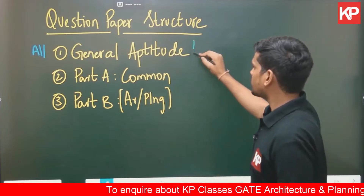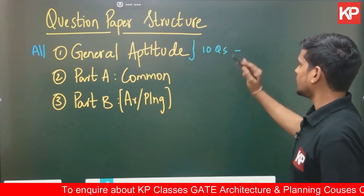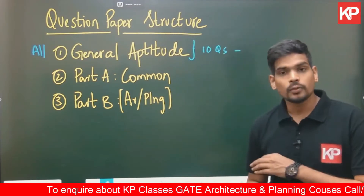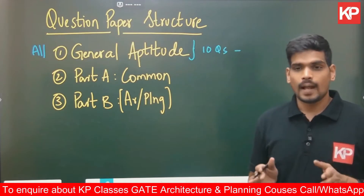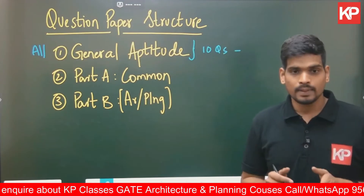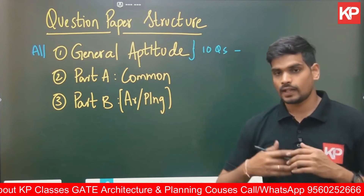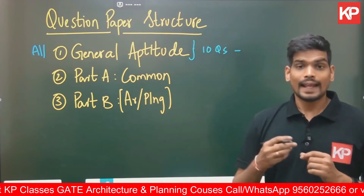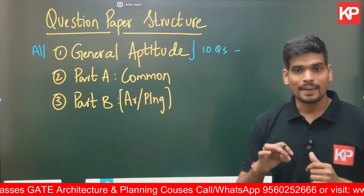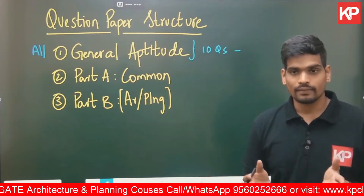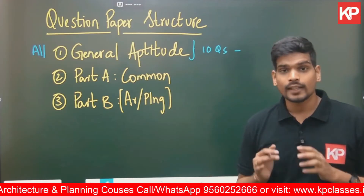General Aptitude will have a total of 10 questions. If you look into the past five years or even before that, General Aptitude has always been a part with only multiple choice questions — there were no NAT (Numerical Answer Type) questions or Multiple Select Questions in that section.